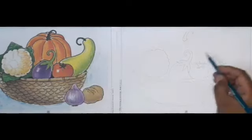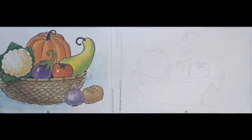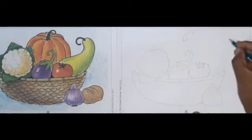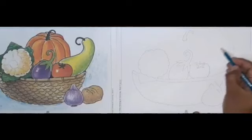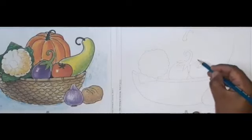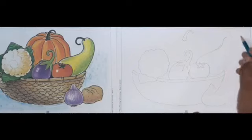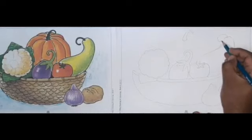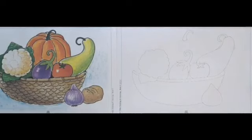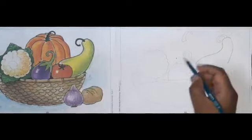Now we draw next vegetable. First we put point here and here. Now we take some measurement, then draw first round, another round.